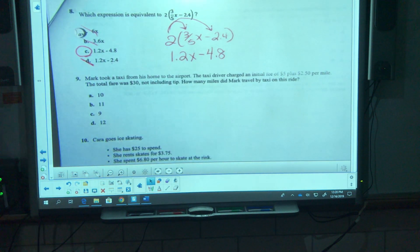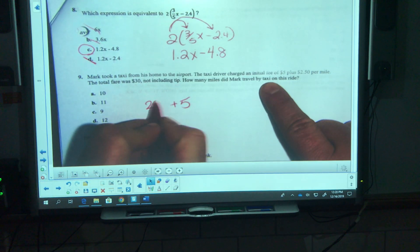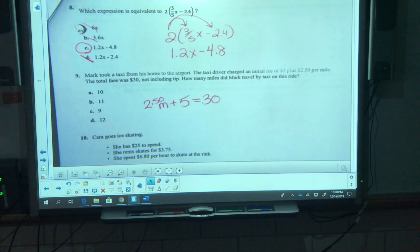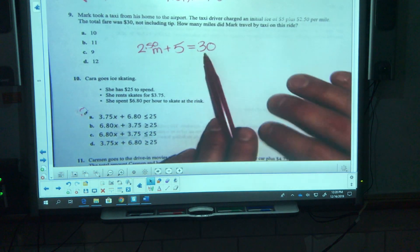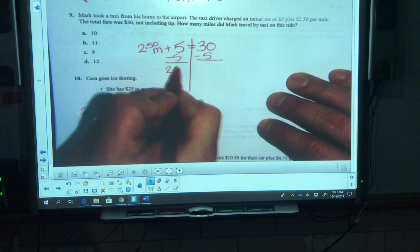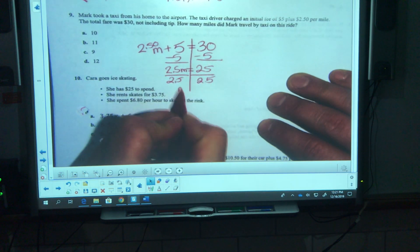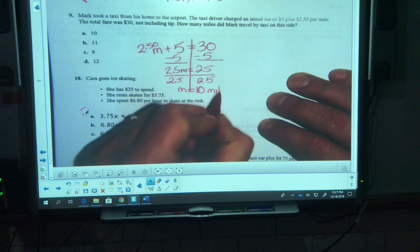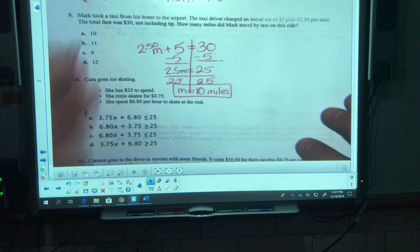Number nine, Mark took a taxi from home to the airport. The taxi driver charged an initial fee of five dollars plus two dollars and fifty cents per mile. The total fare was equal to thirty dollars. How many miles did Mark travel by taxi? Five dollars initial fee, two fifty per mile, it equals thirty. Minus five, 2.5m equals 25. Divide that by 2.5. 25 divided by 2.5 is 10, ten miles. No sentence needed because it's a multiple choice question. Yep, it's a.